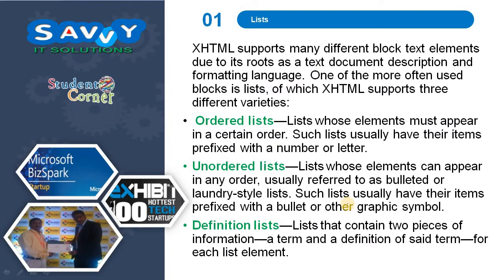XHTML supports many different block text elements due to its roots as a text document description and formatting language. One of the more often used blocks is lists, of which XHTML supports three different varieties.